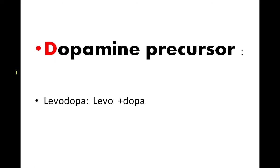Dopamine precursor — example is levodopa. Split the word as 'levo' and 'dopa'. Think of your favorite Levi's t-shirt for 'levo', and 'dopa' is a common term to remember.